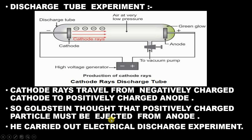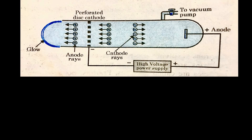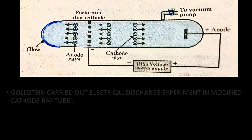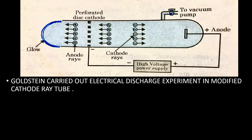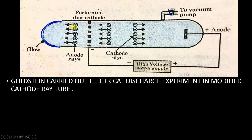To carry out the electrical discharge experiment, he modified the cathode ray tube. What he did was take a perforated disc cathode. These black color boxes you can see are nothing but the cathode, and between these cathode sections there are small gaps. This was the modification done by Goldstein. Now, as usual, this cathode is going to emit cathode rays.